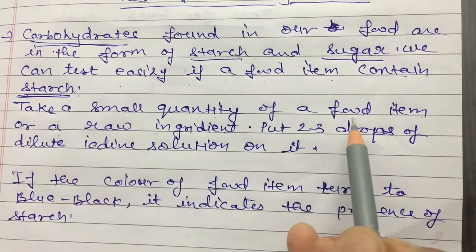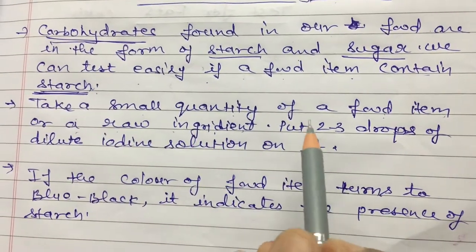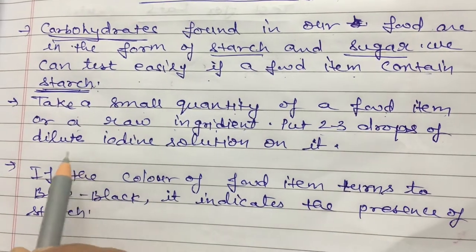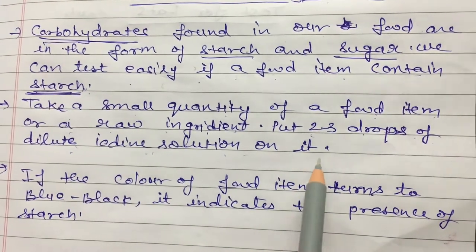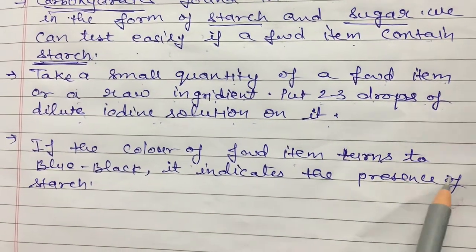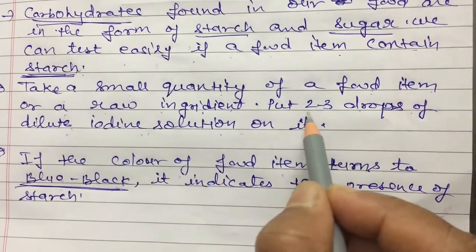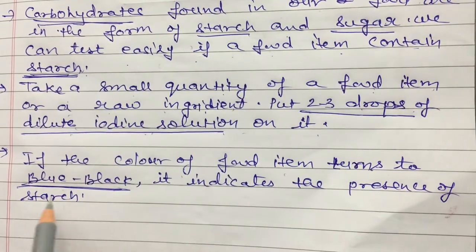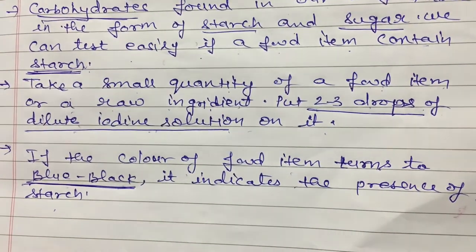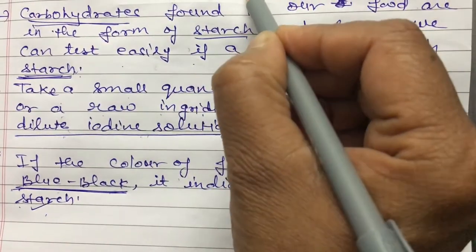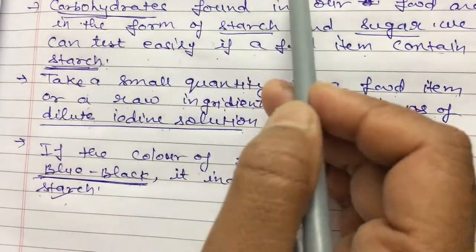Take a small quantity of the food item or raw ingredient. Add 2 to 3 drops of dilute iodine solution to it. If the color of the food item turns blue-black after adding the iodine solution, it indicates the presence of starch. If starch is present, it means carbohydrates are present in that food item.